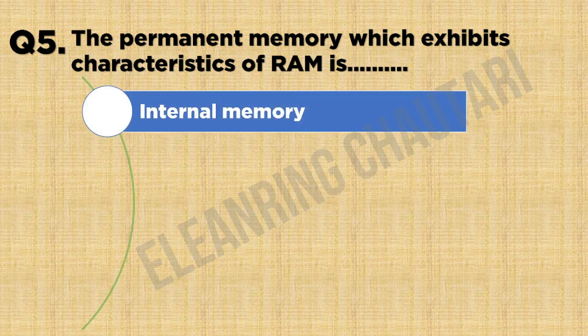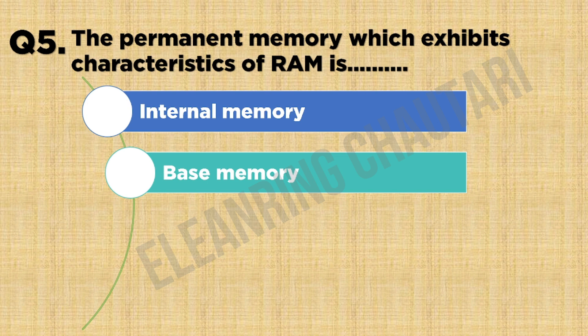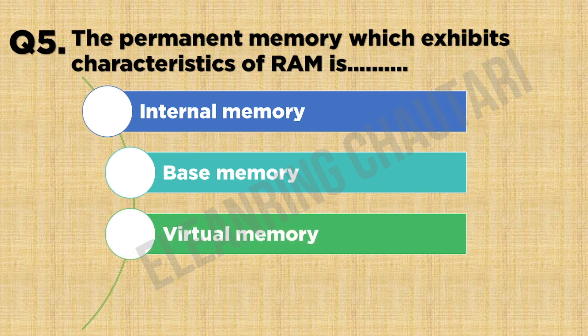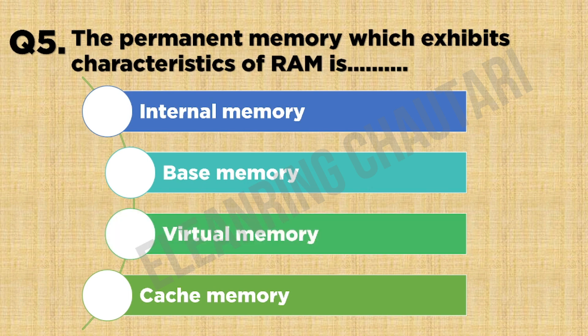Option A: Internal memory. Option B: Cache memory. Option C: Flash memory. Option D: Gas memory. After all, the internal memory works. The answer is Option C: Flash memory.